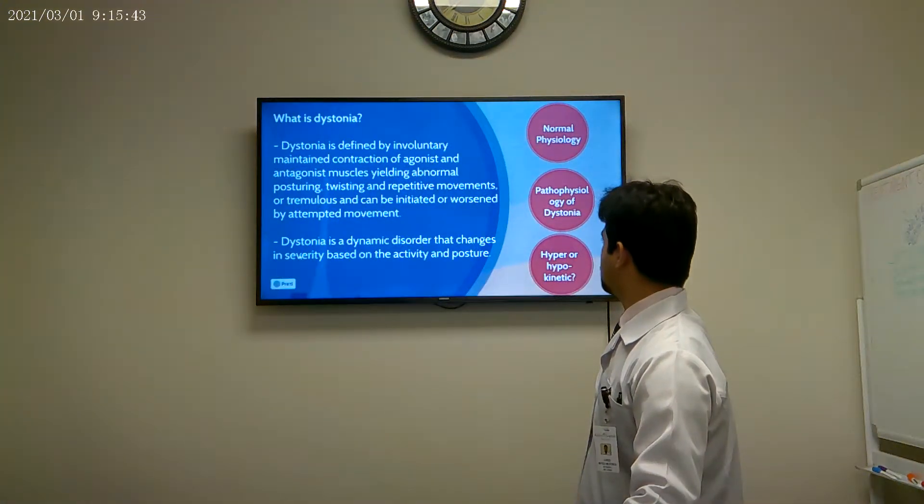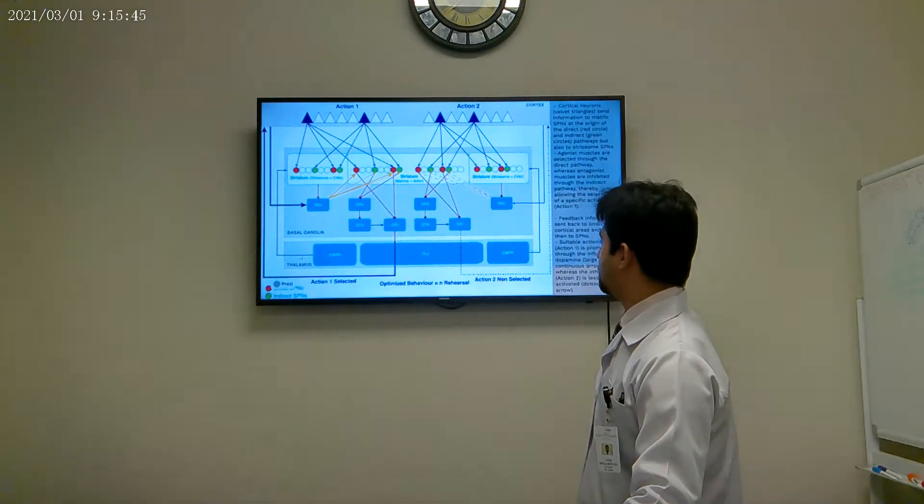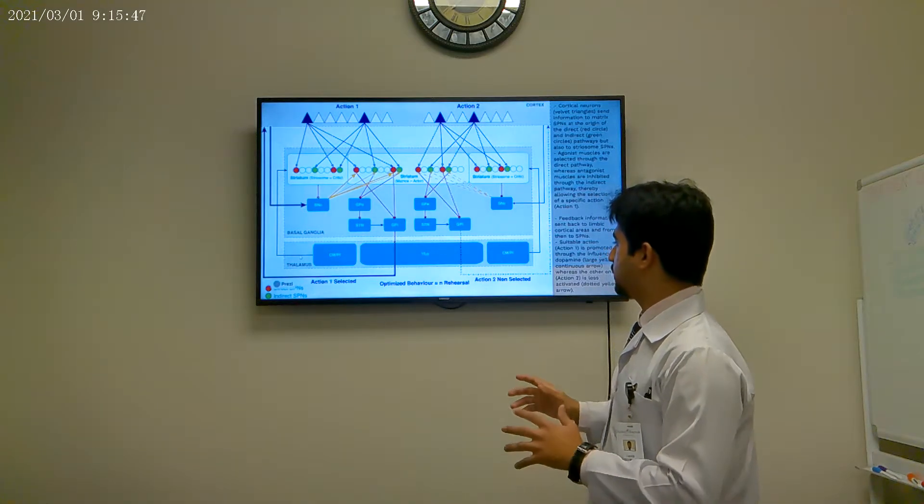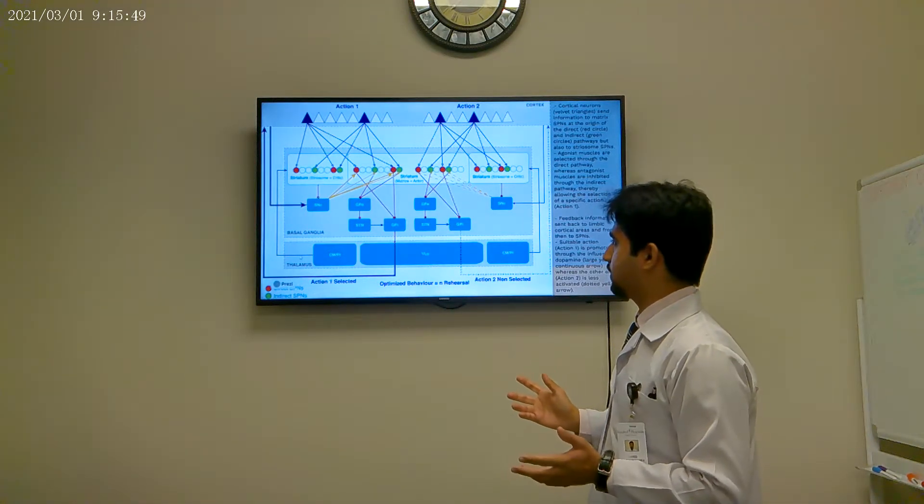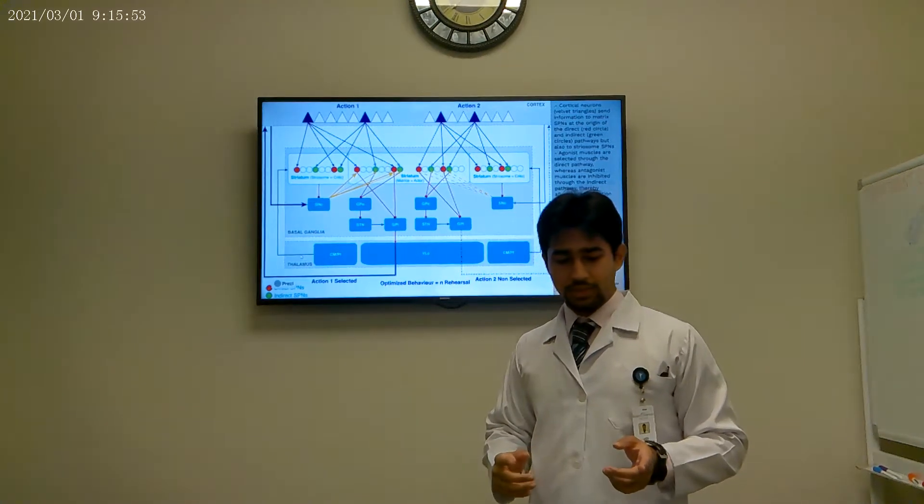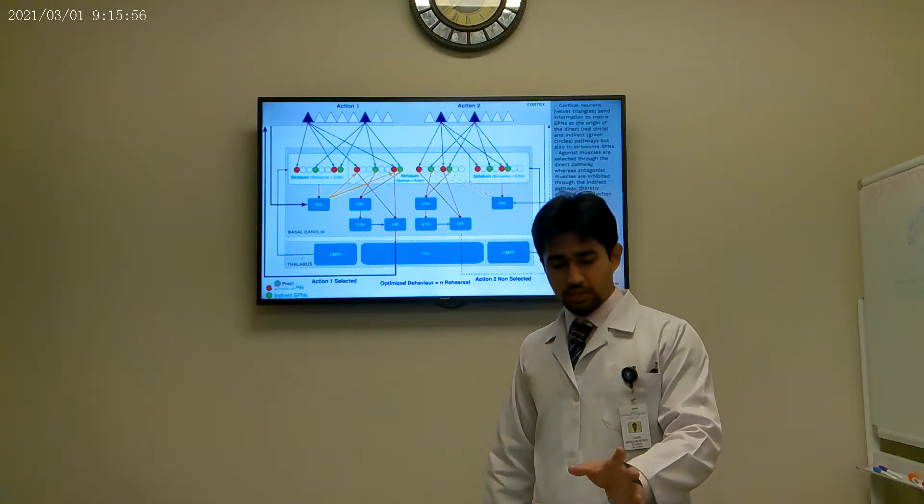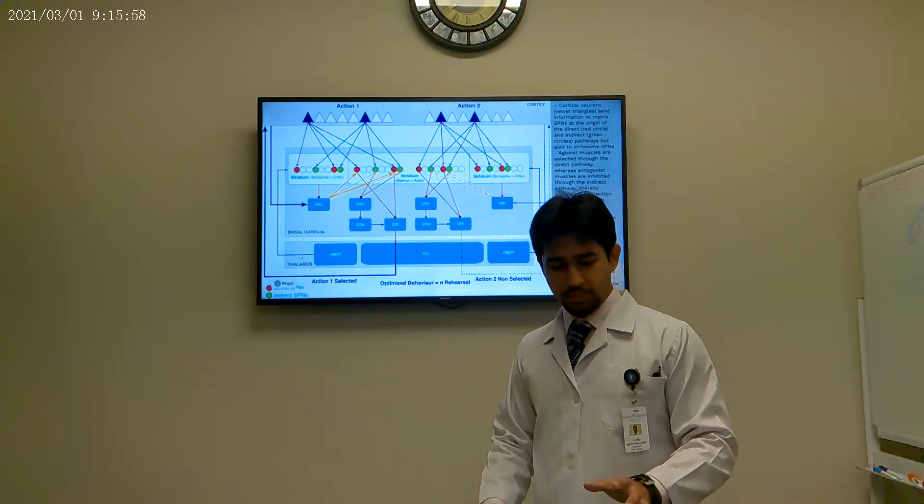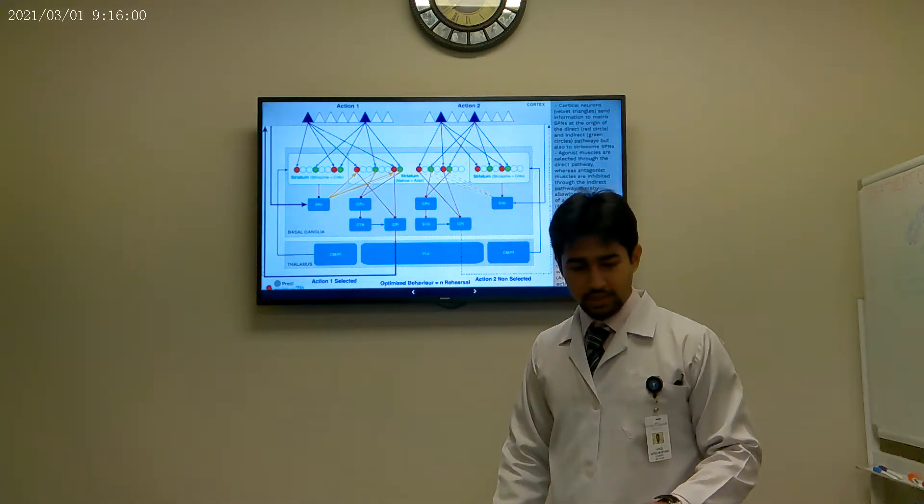At the same time, the cortex sends input to the basal ganglia, the cerebellum, and thalamus. And these relay back information to the motor cortex, so it can learn and modulate movement accordingly. That was the normal physiology. To understand pathophysiology, it's essential we look into this circuit within the basal ganglia. This circuit consists of two parts. There's the direct pathway, and there's the indirect pathway.